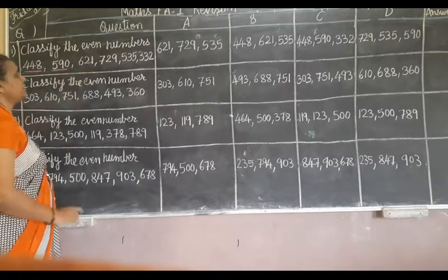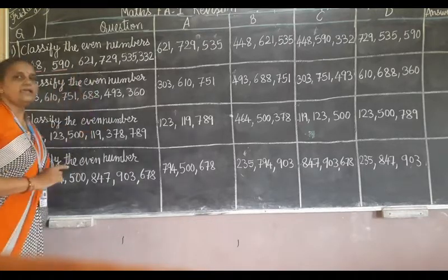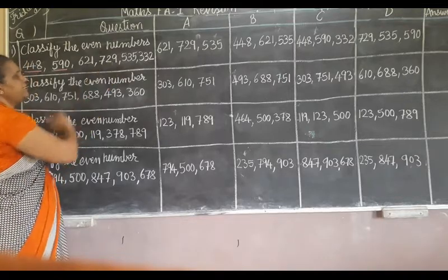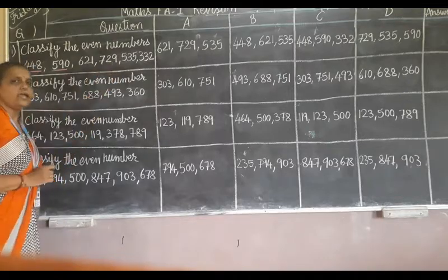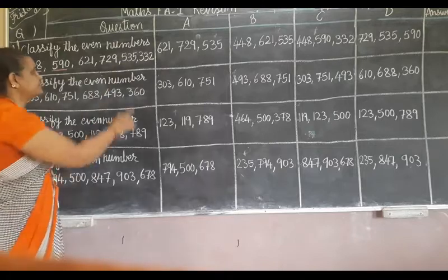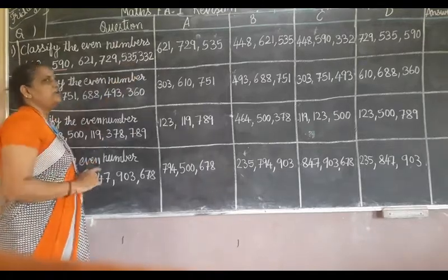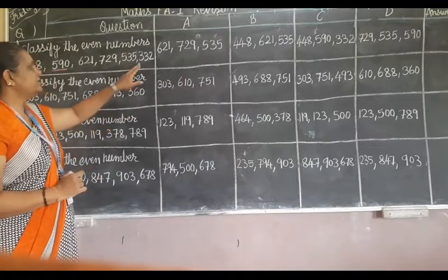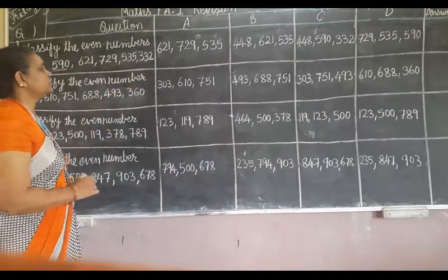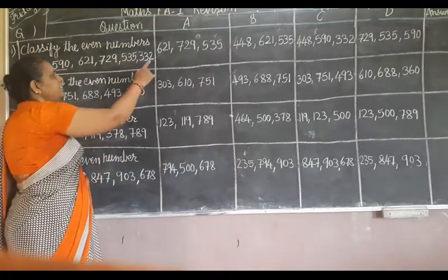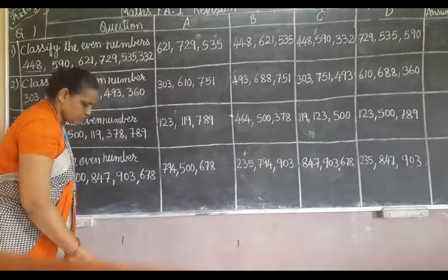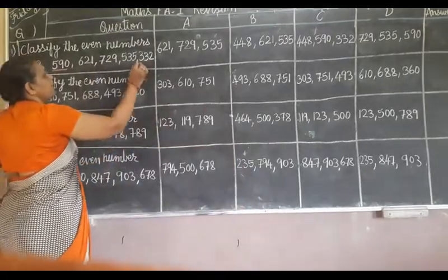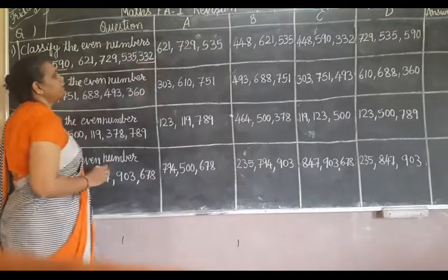621 — 1 is an odd number. 729 — 9 is also an odd number. 335 — 5 is also an odd number. 332 — 2 is an even number. So we have to underline the even numbers.